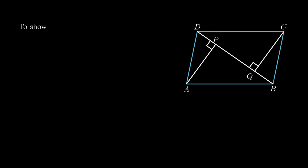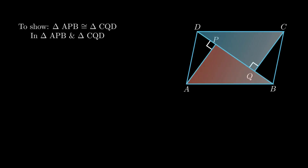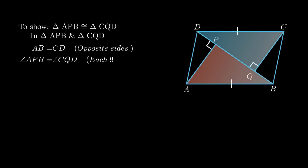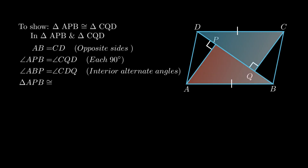The next problem states: ABCD is a parallelogram and AP and CQ are perpendiculars from vertices A and C on diagonal BD. We need to prove triangle APB is congruent to triangle CQD. In triangle APB and triangle CQD: AB = CD as opposite sides of parallelogram are equal; angle APB = angle CQD = 90 degrees; angle ABP = angle CDQ as interior alternate angles are equal. Therefore by the angle-angle-side rule, triangle APB is congruent to triangle CQD.